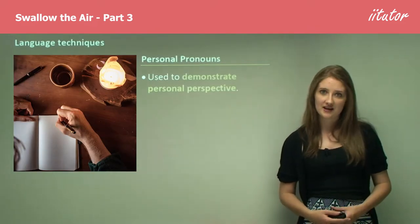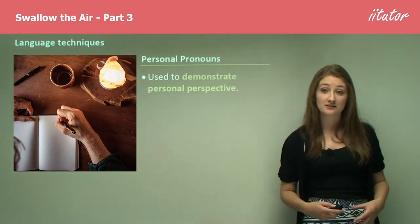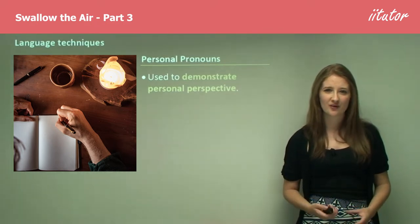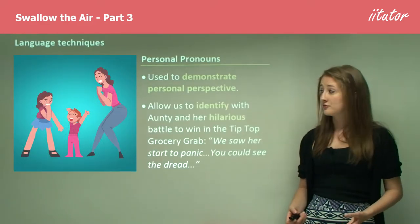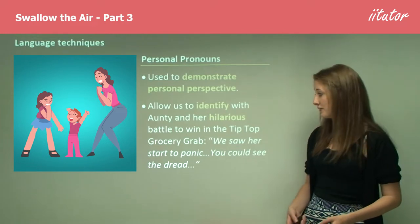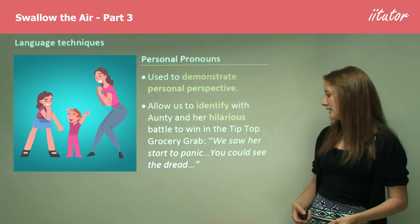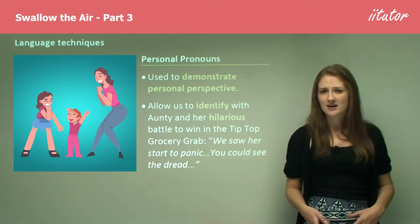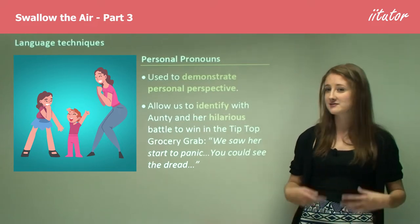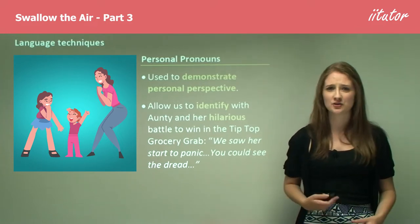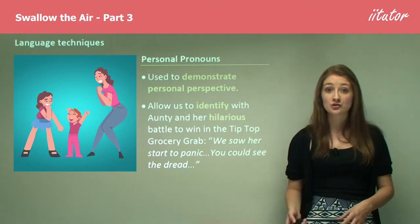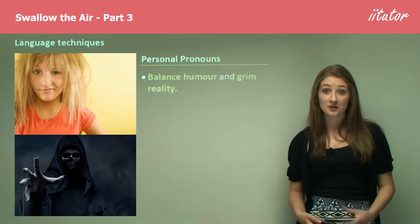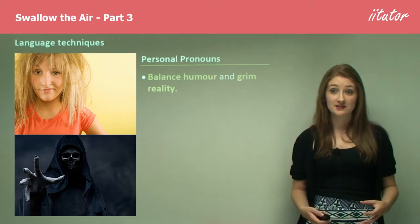Personal pronouns are also a technique used in this novel to demonstrate personal perspective, making it a very personal text with an individual message from the author and from her persona of May. They allow us to identify with Auntie and her hilarious battle to win the tip-top grocery grab. In the quote, 'We saw her start to panic, you could see the dread,' the words 'we' and 'you' are inclusive, drawing the audience in and making them feel part of this funny, action-packed scene. This creates a contrast from the poetic style through a colloquial tone, balancing humour with the grim reality the author is dealing with.